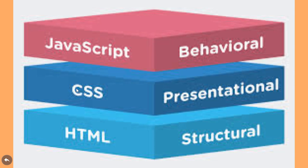Above HTML and CSS is JavaScript, which can be used to change the behavior of a web page. For example, it can be used to create menus — whenever you hover on a menu you get a list of items, and whenever you click on any item you get to the desired link. So JavaScript is used to change the behavior of a web page, and that is why it is one of the important technologies of the World Wide Web.